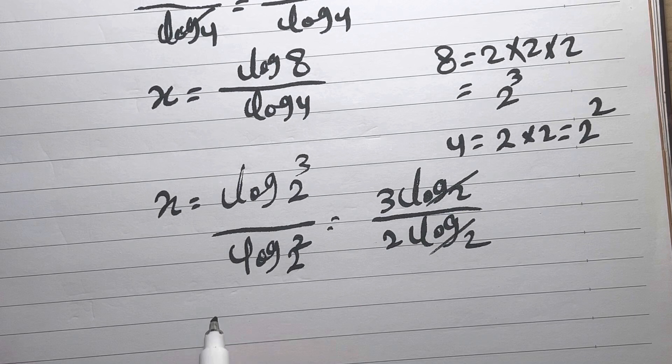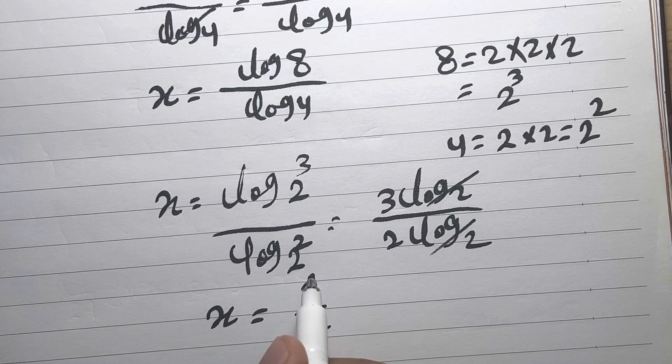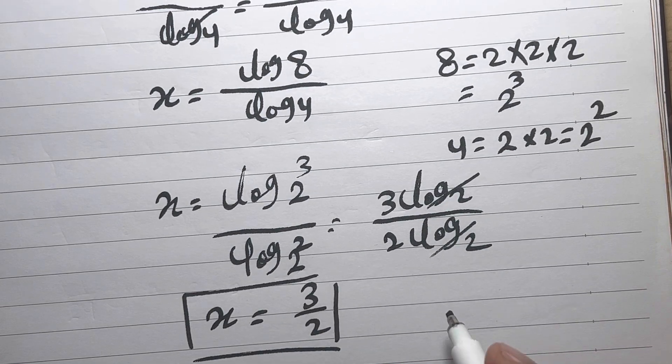After we have the rest, x equals 3 over 2, and this is the value of x. Let's check.